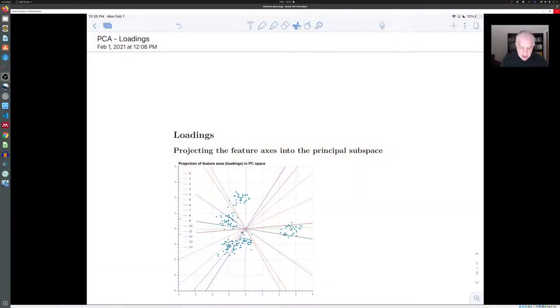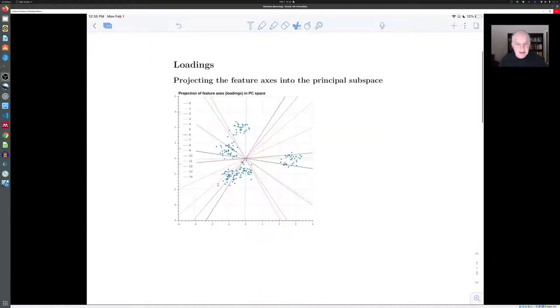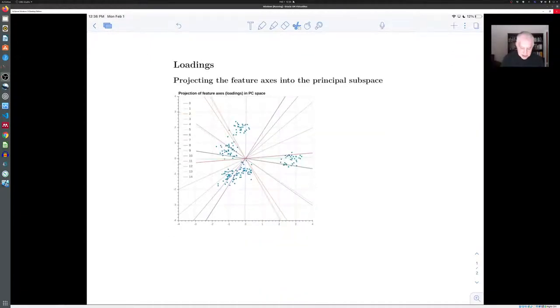So here's a picture of that in practice. This is the data that I looked at in the last lecture. And these are the two principal components for the data, corresponding to the two largest eigenvalues of the covariance matrix. And the lines are the 15 directions corresponding to the original features projected down into this space.